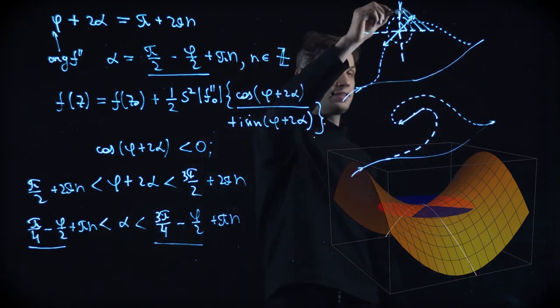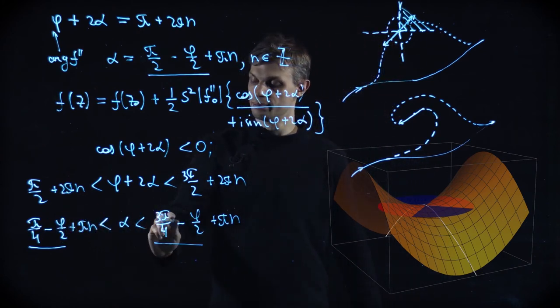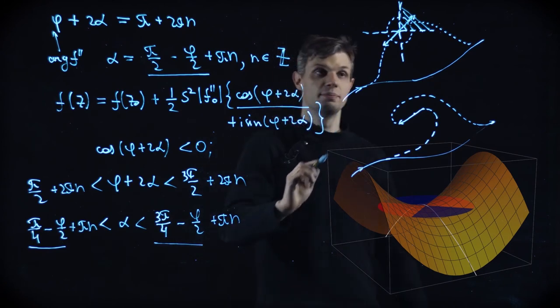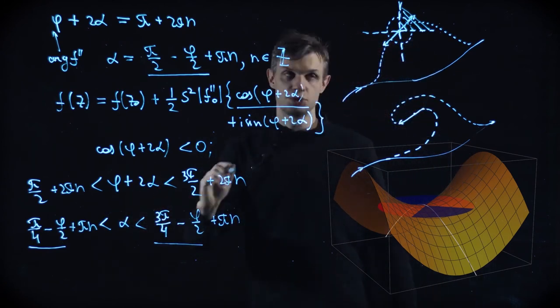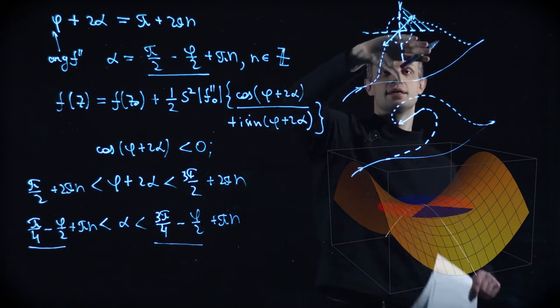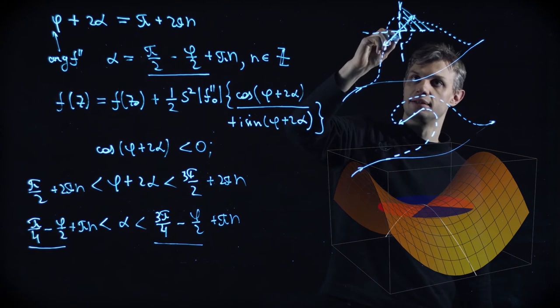The additional regions come from, so the initial region comes from n is equal to zero. So pi by 4 minus phi by 2 and 3 pi by 4 minus phi by 2, this one. And the second region comes from n is equal to 1. So it rotates by pi counterclockwise like that.